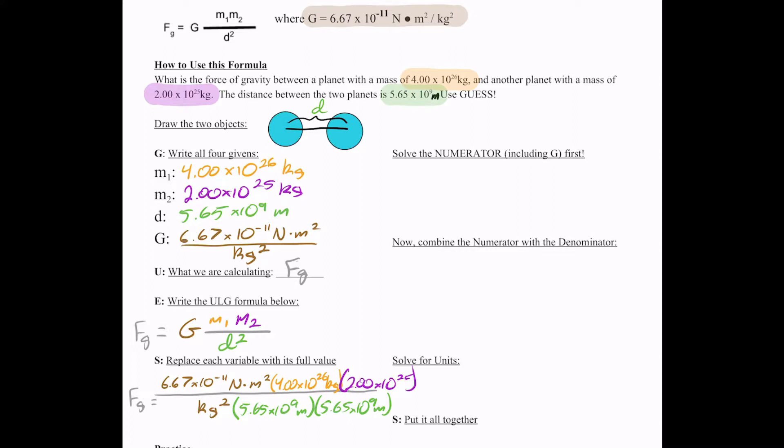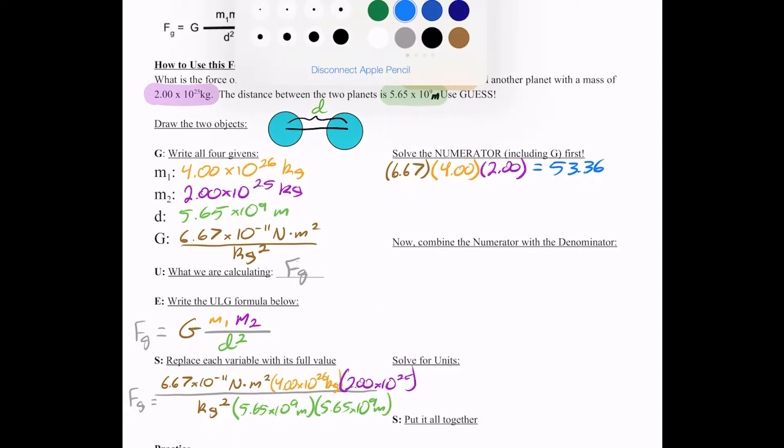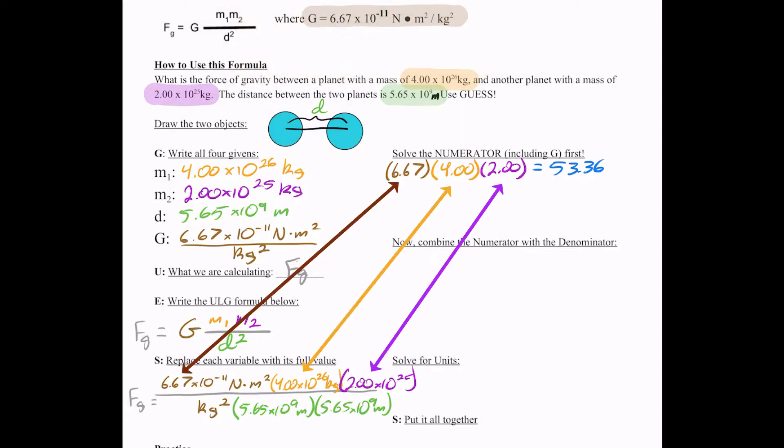My numerator is 6.67 times 4.00 times 2.00. And that equals 53.36. Wait, you didn't do that. I did not. No, I have a calculator. Those are the decimal values from all of the numbers in the numerator. So 6.67, 4, and 2.